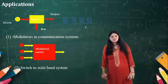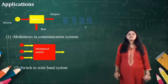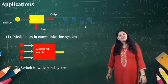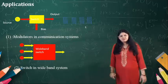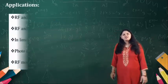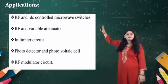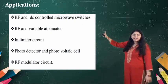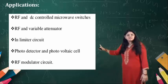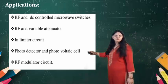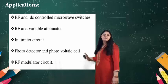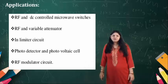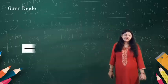The width of the P-plus substrate is WP, the N substrate is WN, and the width of the intrinsic layer is W, with a reverse voltage applied. The applications of the PIN diode are in the communication system. It can be used as a wideband switch, as a modulator, for RF and microwave switches, RF variable attenuator and limiter circuits, in photo detectors and photovoltaic cells, and in RF modulator circuits.